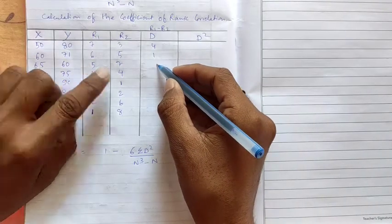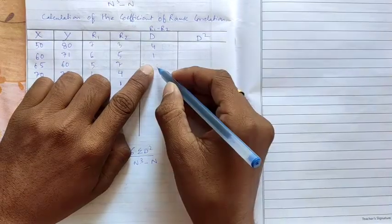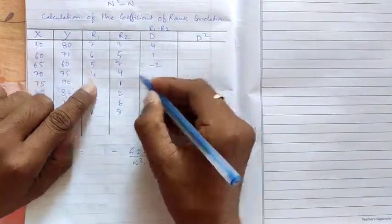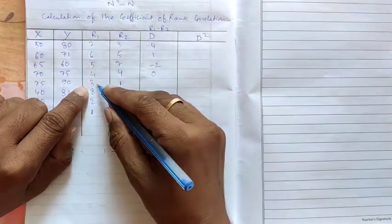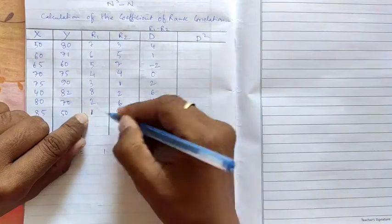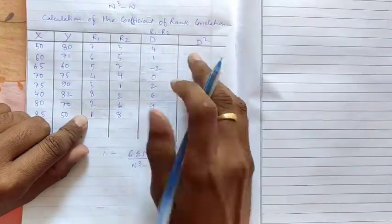Because if I write minus 2 here, so automatically when we square this it will become plus 4. So you can ignore minus here. So 5 minus 7 minus 2. 4 minus 4, 0. 3 minus 1, 2. 8 minus 2, 6. 2 minus 6, 4. 1 minus 8, 7. So this way we got d.